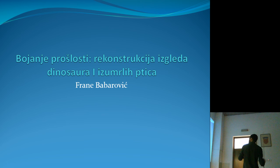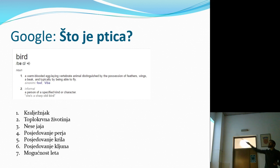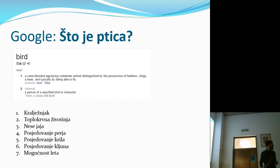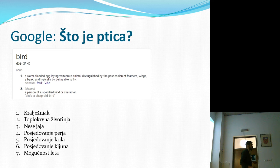Počeo sam predavanje s nečime što sam si sam postavio kad sam krenuo pisati - guglao sam što je ptica. Zanimalo me što će Google izbaciti. Kad izvučem karakteristike, primijetim da je ptica kralježnjak, toplokrva životinja, nese jaja, posjeduje perje i krila, posjeduje kljun i ima mogućnost leta. To je nešto što bi definiralo pticu - a ja bih rekao da bi to poprilično moglo definirati i dinosaura.